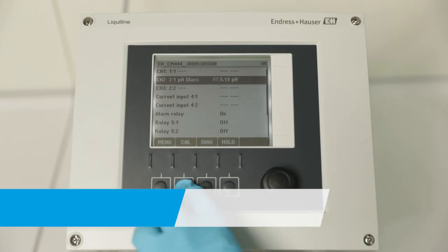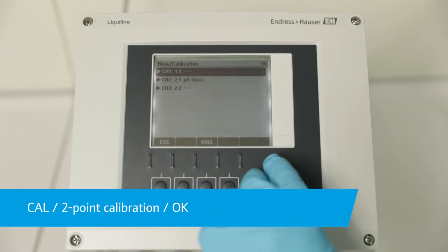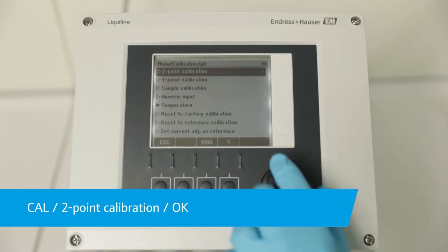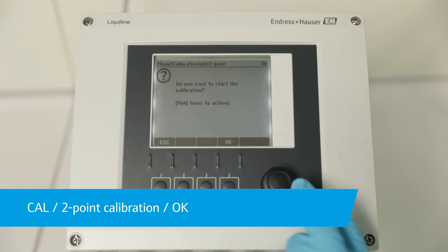Press the soft key Cal, select the right channel, choose and confirm two-point calibration with the navigator, and confirm the start of calibration with OK.